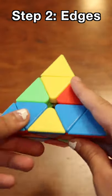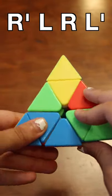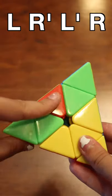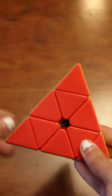Next you're going to get the edges for that side, so put that side on the bottom. If the edge is on the right like this, do R' L R L'. And if the edge is on the left like this, do L R' L' R. When this step is done, you should have one fully completed side.